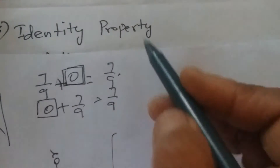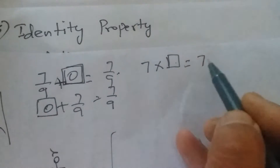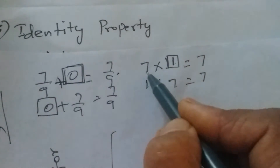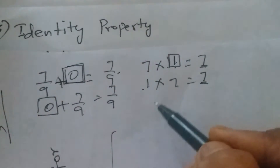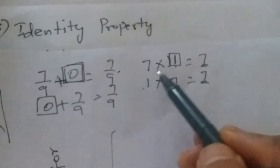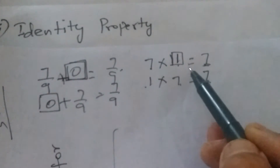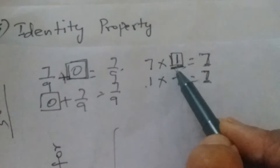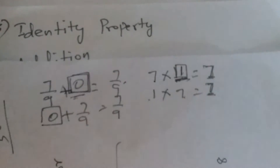For multiplication, the identity element is 1. Any number multiplied by 1, or 1 multiplied by any number, gives the same number as the answer. For example, 7 × 1 = 7 and 1 × 7 = 7. So 1 is called the multiplicative identity, and 0 is called the additive identity.